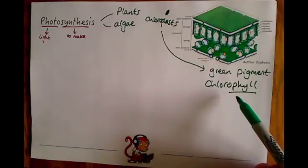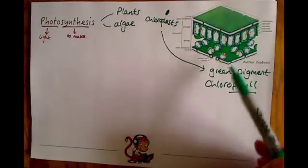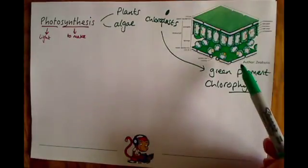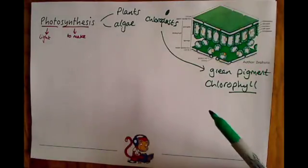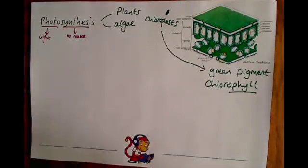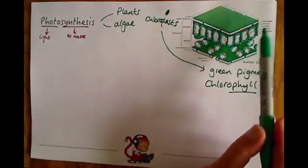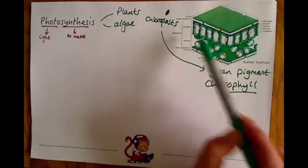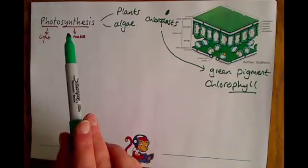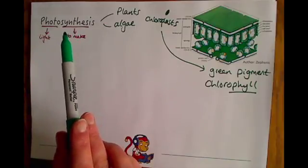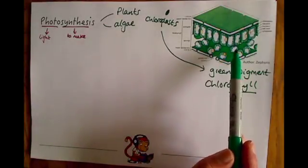It's the chlorophyll that absorbs the sunlight and allows photosynthesis to happen. Not all plant cells and algal cells will have chloroplasts. Root cells, for example, underneath the ground, there's no point of them having chloroplasts. But where the sunlight is able to reach, they are going to be packed full of chloroplasts for photosynthesis to happen.